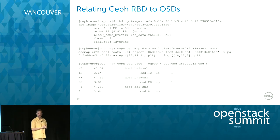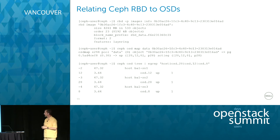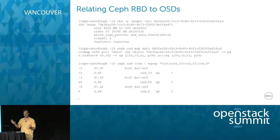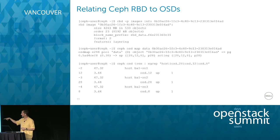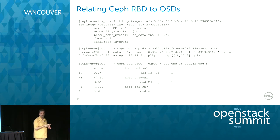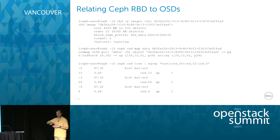You might want to know what OSD a particular image is on in case a disk fails. For block storage, there are three copies of all objects. You can run a command to figure out where a given volume is — the three numbers separated by commas are the OSD numbers, with the primary being, for example, OSD 28. You can then look up which machines those OSDs are on. If you set up your pools with rack and data center awareness, Ceph would also split them across racks.